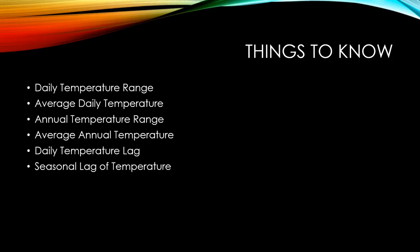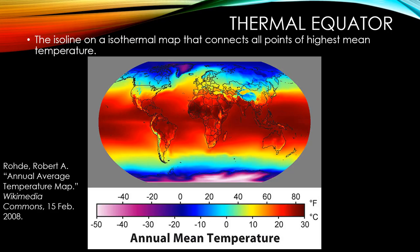You have the daily temperature lag, which is the amount of time between maximum incoming energy and maximum temperature over the day. You have seasonal temperature lag, which is the amount of time between the highest incoming insolation and highest temperature on an annual basis. This is kind of the same thing as daily temperature lag — they are directly related, and this lag pattern does correspond in both of them.